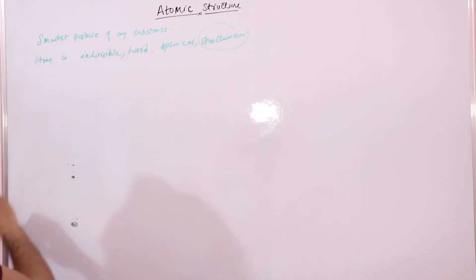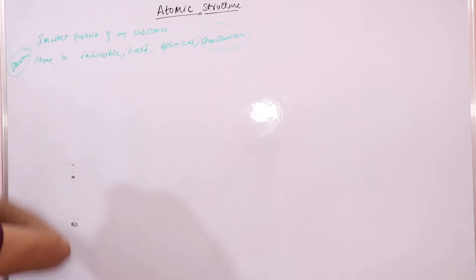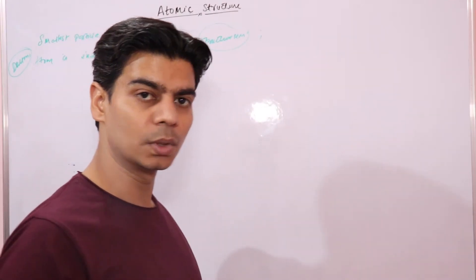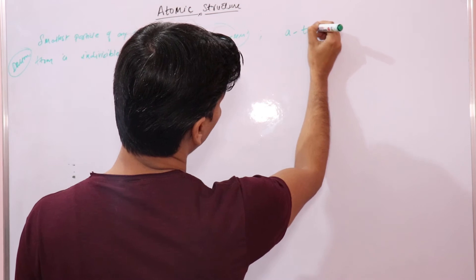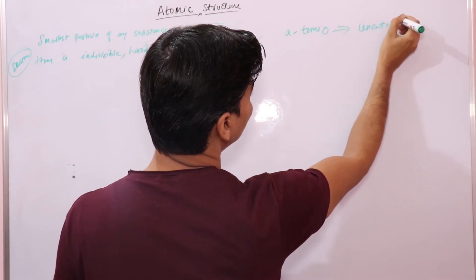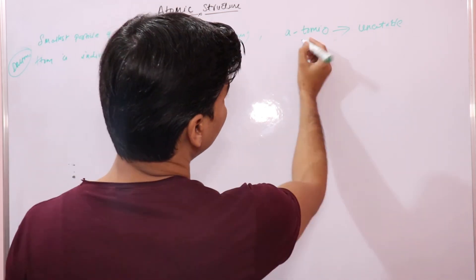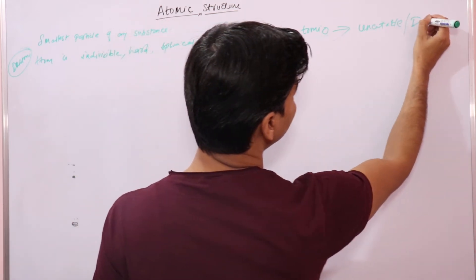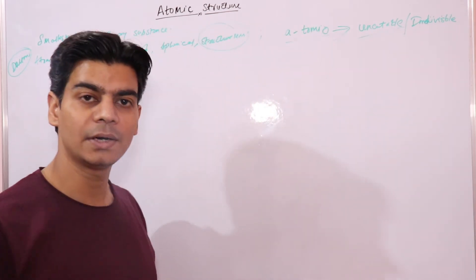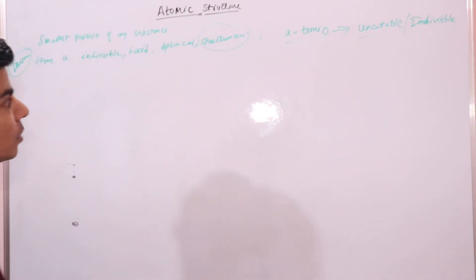Dalton's idea of the atom as indivisible, hard, and spherical was taken from the Greek word 'atomeo,' which means 'uncuttable' or 'indivisible' — meaning it cannot be further subdivided or broken down into further smaller particles. From this Greek word 'atomeo,' the English word 'atom' came.